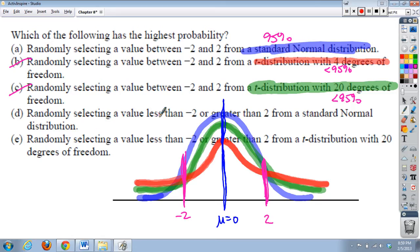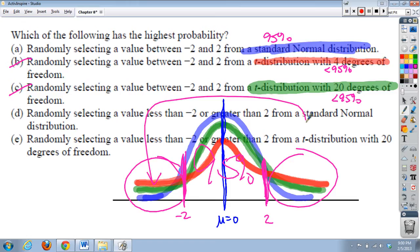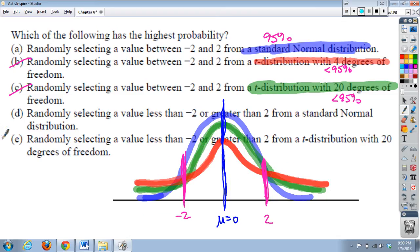Now D, a value less than negative 2 or greater than 2 from a standard normal distribution. So if we go back to our blue curve here, so they really mean down here and up here. Well, if 95% is in the middle, they're really wanting to know how much is in the tails. Well, that's only 5%. So that's definitely not bigger than 95%. So this answer was 5%. And if we wanted to talk about in the t-distribution with 20 degrees of freedom, well, we're still talking about this much and this much. Do we think that's going to be any more than 95%? I highly, highly doubt it. So I would say my answer would be A, 95%. I believe that's going to be the highest probability.